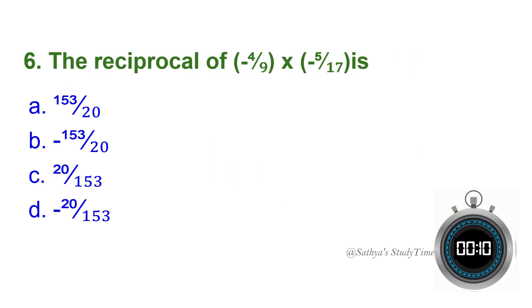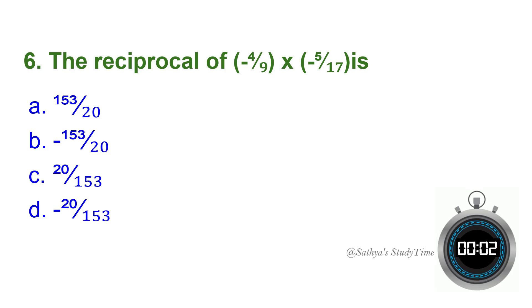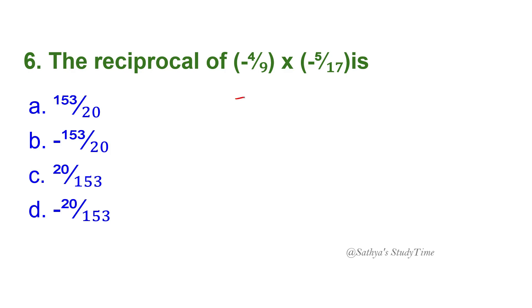Sixth question: The reciprocal of (minus 4/9) × (minus 5/17) is — your time starts now. The answer: when you simplify the product you get 20/153, and the reciprocal means swapping numerator and denominator. So option A is the answer.